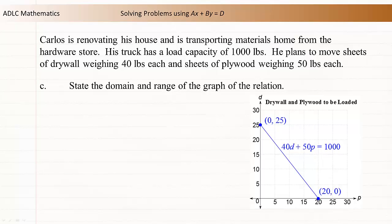The next part of the problem asks us to state the domain and range of the graph of the relation. We put p on the horizontal axis, so we'll treat it as the independent variable. This means the domain will give the possible values of p. The possible values of p are from 0 to 20 inclusive. Earlier we decided that p was discrete, so p must be a whole number.